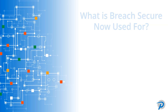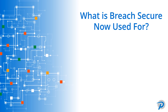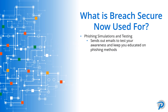Now let's expand a little bit more on what Breach Secure Now is used for. The first thing we touched on was phishing simulations and testing. These are where your organization is going to send out test phishing emails regularly, with the whole goal of understanding how you interact with those emails, whether you click on any links, and whether you submit any data to places that you shouldn't. The intention is to help raise your awareness of popular phishing methods in today's environment, as well as allow you to avoid any complacency when dealing with emails on a daily basis.